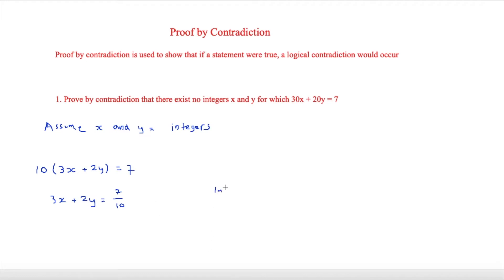So you write: an integer plus another integer cannot equal 7/10. That is your final answer. This cannot be correct because a logical contradiction has occurred.